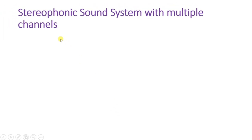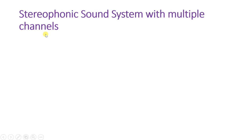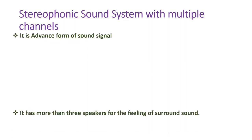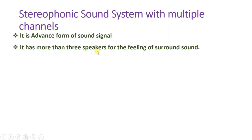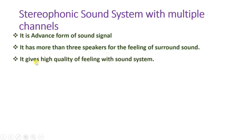Now let us look at stereophonic sound system with multiple channels. It is an advanced form with more than three speakers, giving a surround sound effect. The placement of speakers matters here — multiple channels are connected to multiple speakers. This gives a high-quality, more realistic experience to those listening, with greater immersion compared to mono or two-channel stereo.